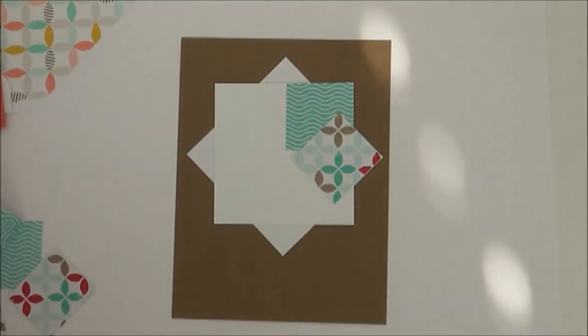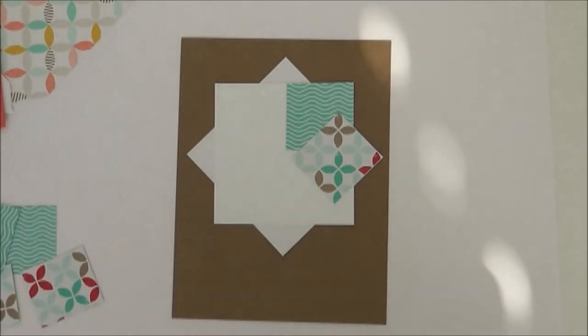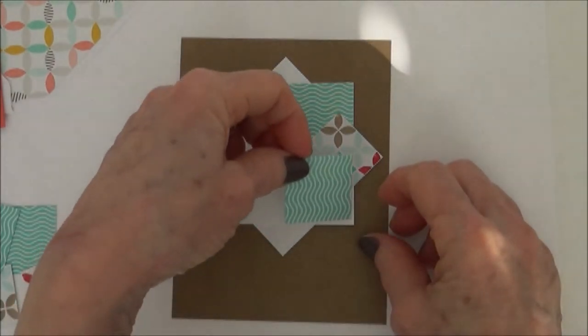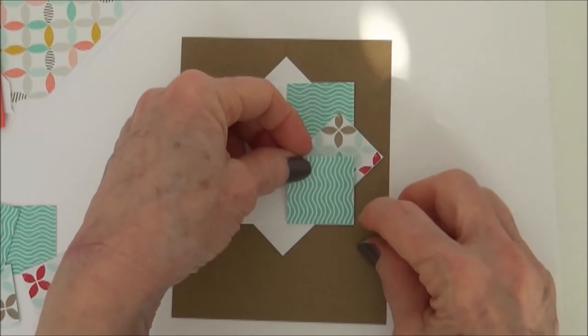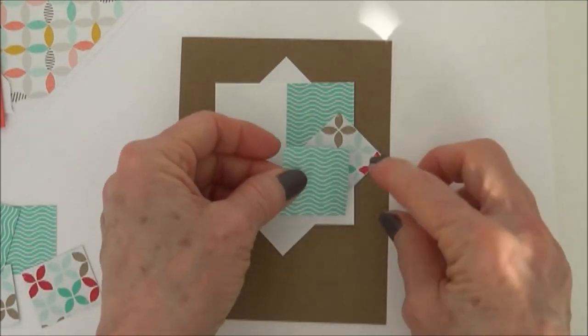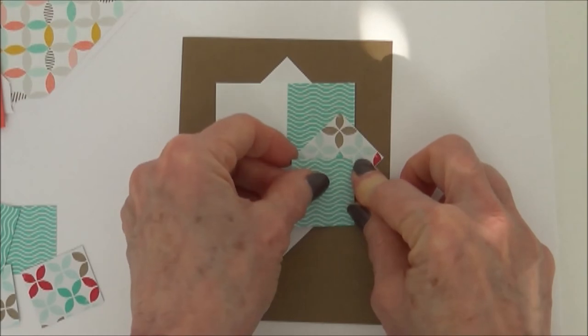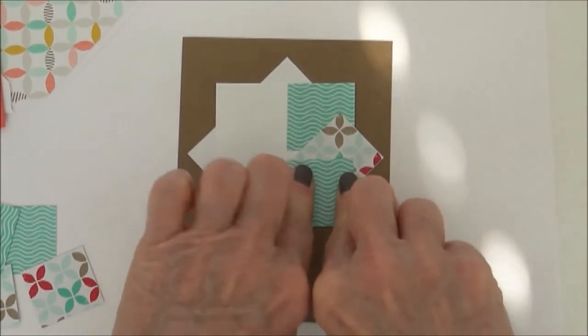Then we're going to rotate and go back with the solid again. And you want adhesive, snail on the back of that. And then you're going to run that one. And then I'm going to turn this this way.